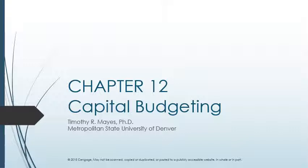By the name of Allah, the most gracious and most merciful. Chapter 12: Capital Budgeting. My dear students, we discussed in the last lecture what is the meaning of capital budgeting, what are relevant and irrelevant cash flows, how to calculate the relevant cash flows, and estimating the cash flows. We are already classifying all cash flows as part of one of the three groups: the initial outlay, the annual after-tax operating cash flows, and the terminal cash flow. We also covered calculating straight-line depreciation expense and depreciation expense using MACRS (Modified Accelerated Cost Recovery System), as well as the VDB (Variable Declining Balance) function.